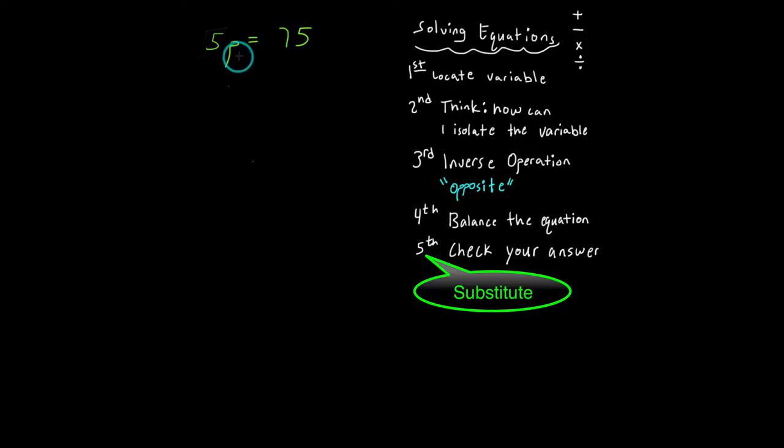Step two is to think, how can I isolate this variable? I want to take five and push it to the other side of the equation. Step three is the inverse operation. So how can I push this over to the other side of the equation? Or how can I get rid of it on this side? I've got to do the inverse operation.